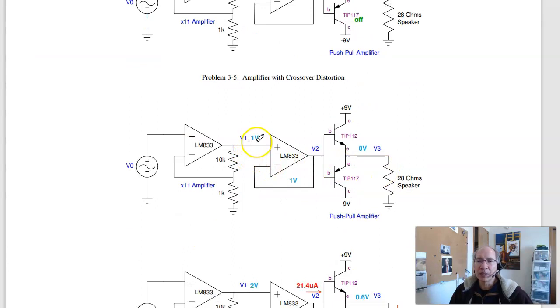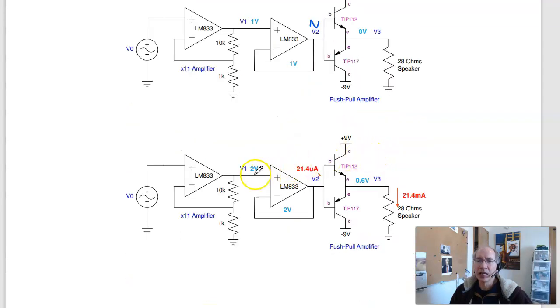When the input is 1 volt, again, this is 1 volt right here. Again, I need 1.4 volts to turn this on. I don't have it. I get 0. At 2 volts, that's more than, well, this is also 2 volts. 2 is more than 1.4, so this turns on. The output becomes 0.6 volts.